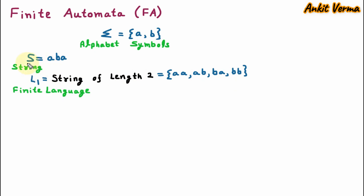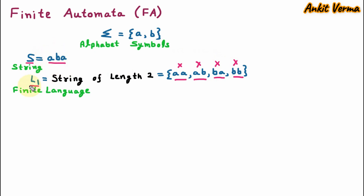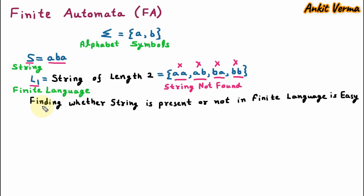Now let us suppose that we want to search the string aba in the finite language L1. We compare aba with all strings one by one: aba with aa — not matching; aba with ab — not matching; aba with ba — not matching; and aba with bb — not matching. In four comparisons we conclude that the string is not found in the finite language. So finding whether a string is present or not in a finite language is easy and requires only simple computation.